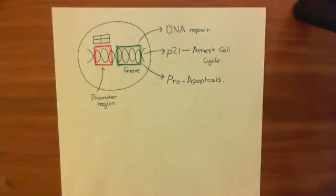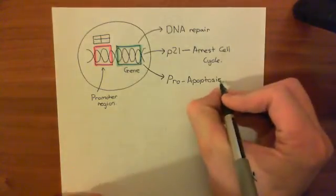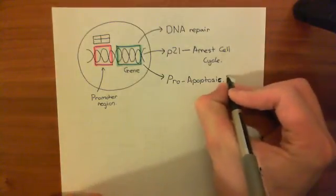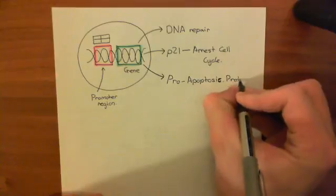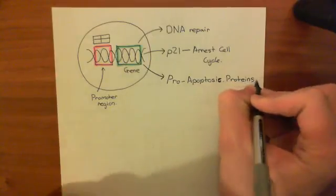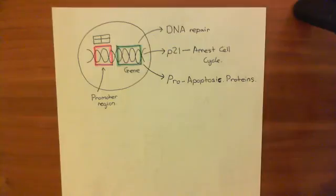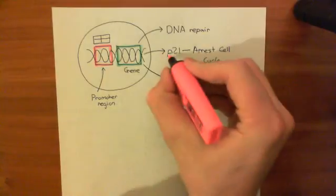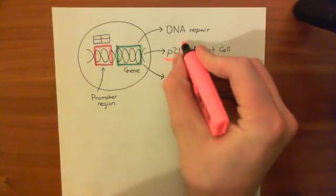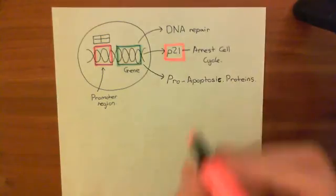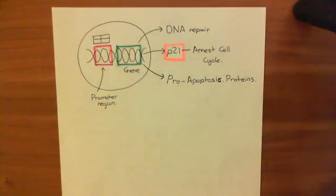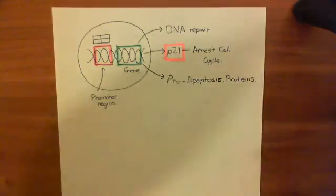Again, we're not going to discuss pro-apoptotic proteins in this video. We'll do that in a separate video where we discuss the intrinsic pathways of apoptosis. What we're going to discuss in this video, because we've studied the cell cycle and we know something about it, is we're going to discuss P21, because this is going to arrest the cell cycle. So we want to know, how does it arrest the cell cycle? And basically, it does it in three ways.